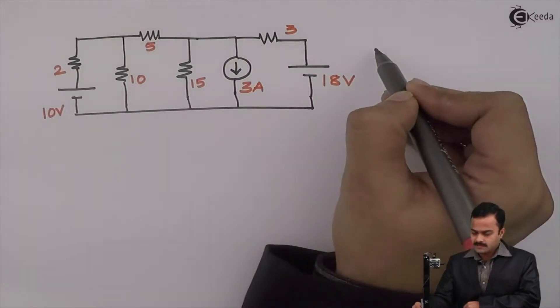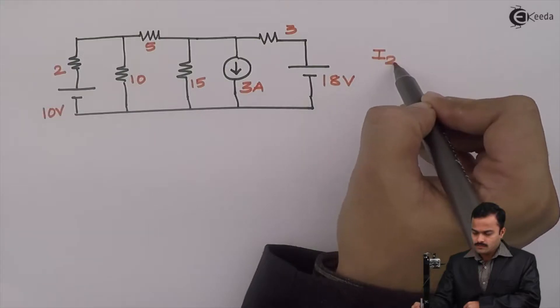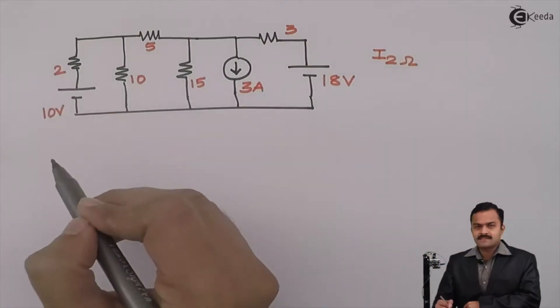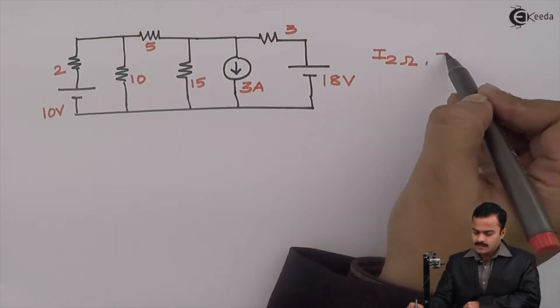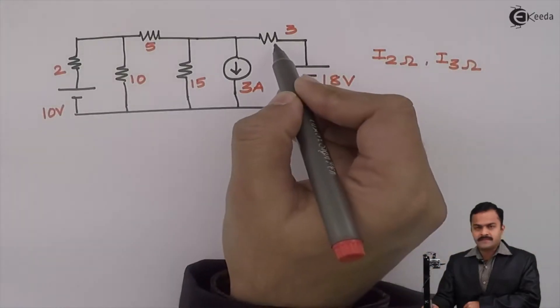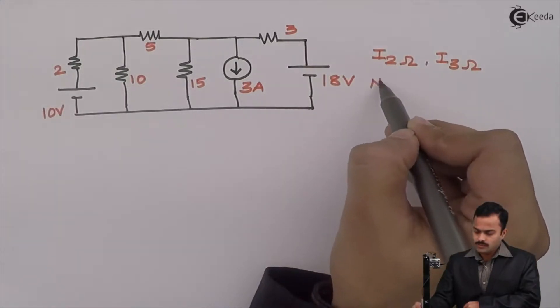Objective is to get current flowing through 2 ohm resistance and current flowing through 3 ohm resistance using nodal analysis.